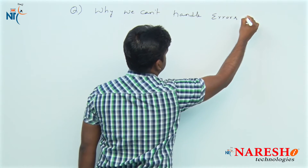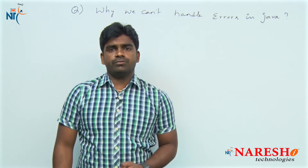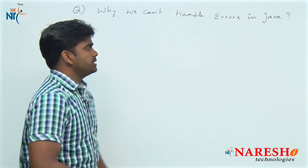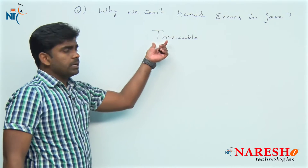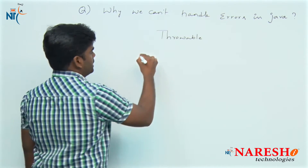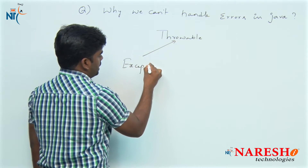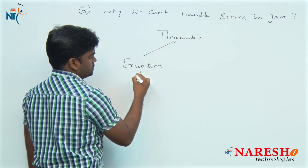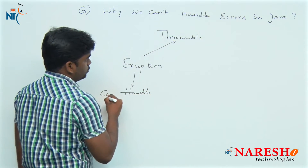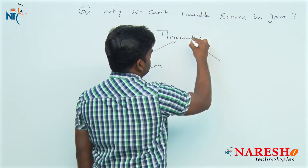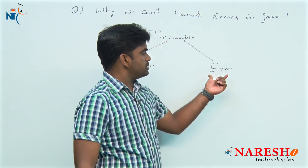Why we cannot handle errors in Java? As we know, in the hierarchy of exception handling, the top class of all the exceptions is Throwable. The Throwable class has two extensions: one is Exception, which we can handle — that is allowed. But there is another extension called Error, so why we cannot handle this Error?